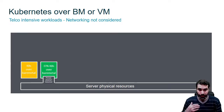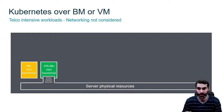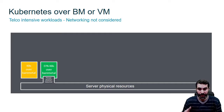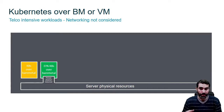If we want to get the maximum performance for our pods we need to give them dedicated resources. In this case what we are doing is installing an EPA Kubernetes over bare metal, so our pods are going to be using dedicated resources to run.